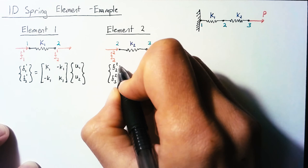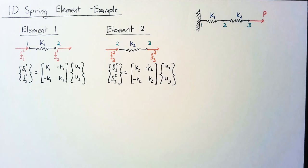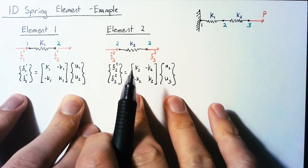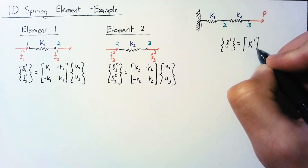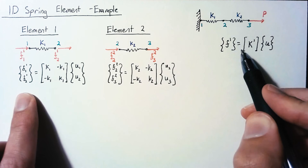Now the next step is to combine these two systems of equations together so that we can calculate a solution for the overall system. In order to do that, I'm going to use the shorthand that we defined in the previous video. We have the forces on element 1, which are going to be equal to the stiffness of element 1 multiplied by the displacements.